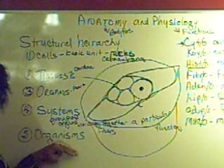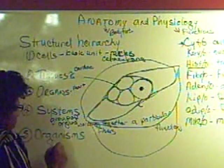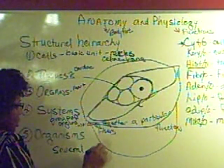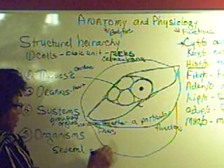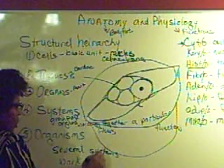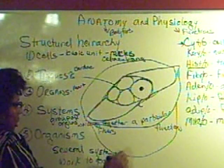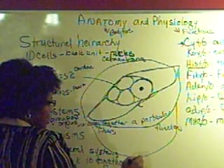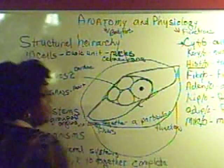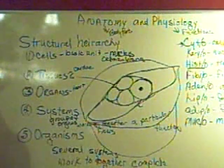Then you have organisms. And organisms, a complete living organism is several systems that work together to create a complete living organism. And this concludes lesson one of our anatomy and physiology series. Thank you.